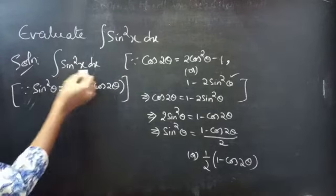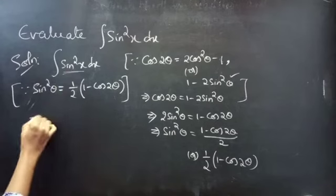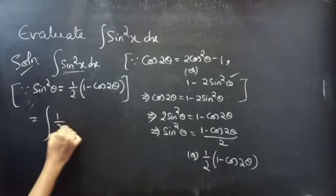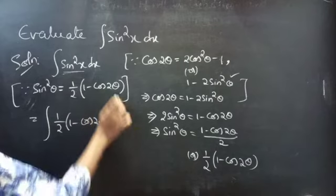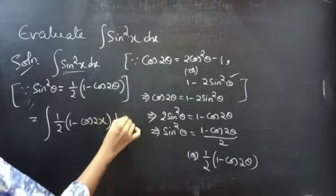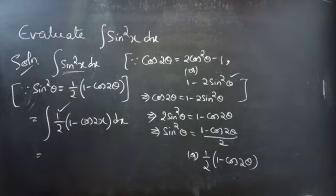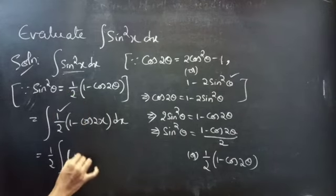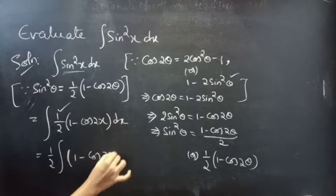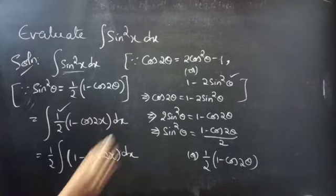Now we can change the integrand for x. We'll get 2x into dx. Now write the constant outside the integral: 1 by 2 integral 1 minus cos 2x into dx.